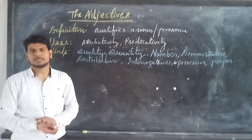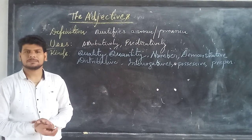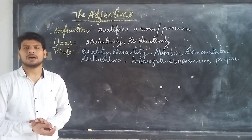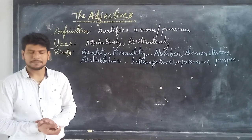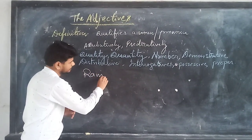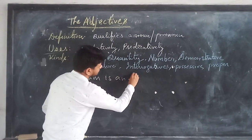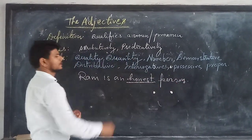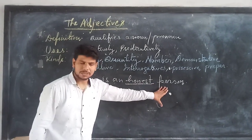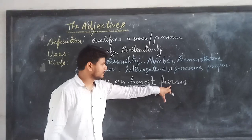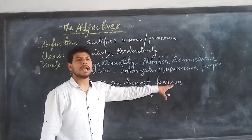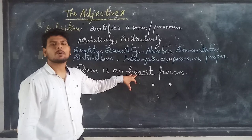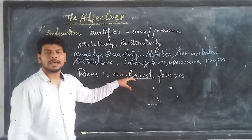Today we are going to talk about a new topic: adjectives. An adjective is a word which qualifies or adds to the meaning of a noun and pronoun. For example, 'Ram is an honest person.' Here, the word 'person' is a noun, and the quality added to this noun is honesty. Therefore, 'honest' is an adjective.